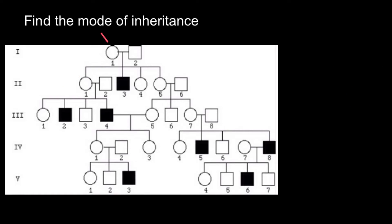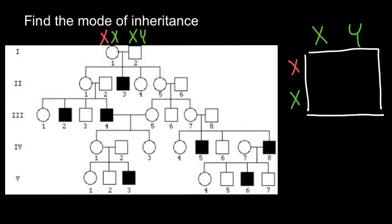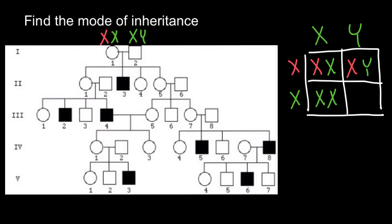So the genotype of this female is a defective X chromosome and a normal X chromosome. The male genotype would be normal X and normal Y chromosome. Let's build a Punnett square for this couple: the genotype of the male on top and the genotype of the female on the side. From the mother's side: defective X with father's normal X gives a carrier daughter; defective X with father's normal Y gives an affected son; normal X with father's normal X gives a normal daughter; normal X with father's normal Y gives a normal son. As you see, 50% of the male progeny would be affected.